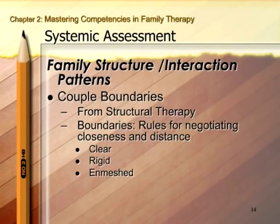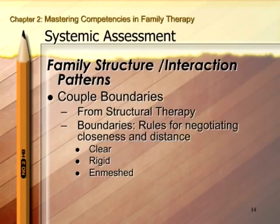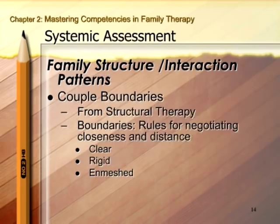When assessing the couple subsystem, the first place we start is assessing their boundaries. Boundaries is a concept from structural therapy and serves as a starting point for getting a sense of what's going on in the couple relationship. In the broadest sense, boundaries are rules for negotiating closeness and distance. Each family system and each couple system comes up with its unique ways of negotiating closeness and distance. These rules are often very much affected by culture and gender. Even when we categorize a family as having enmeshed boundaries, every family has a unique set of rules for how they do enmeshment or rigidness. There's a section where you can describe the unique characterizations of how they negotiate boundaries.